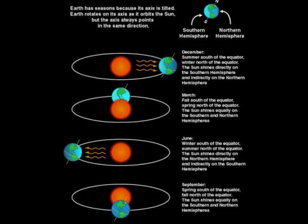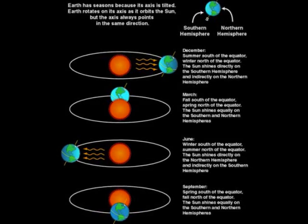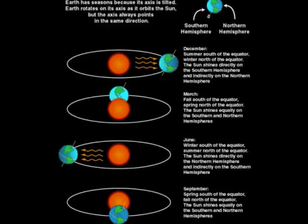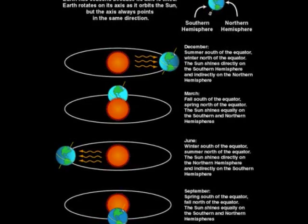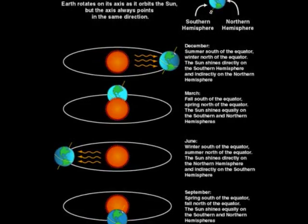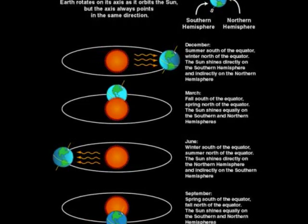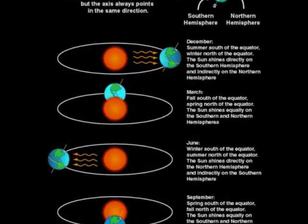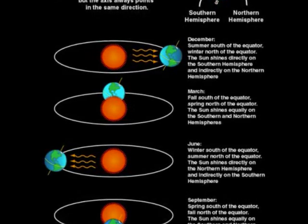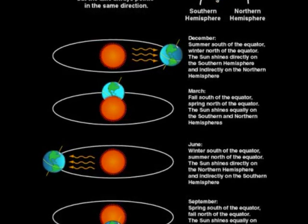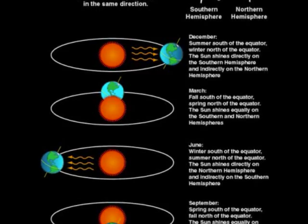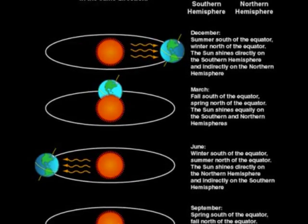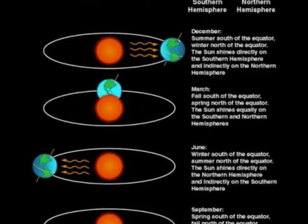In the first example, the northern hemisphere — which is where we are located — experiences winter when it is tilted away from the Sun, resulting in less sunlight. At the same time, the southern hemisphere is receiving more direct sunlight. They are experiencing summer.